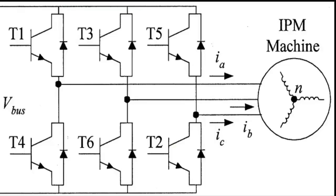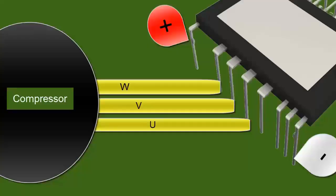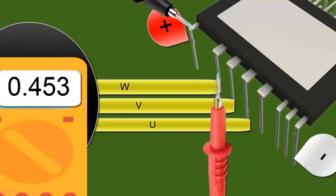Place the black probe of the multimeter on the positive input of the IPM electronic circuit. Use the red probe to measure the points UVW.